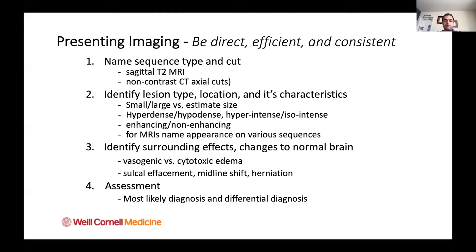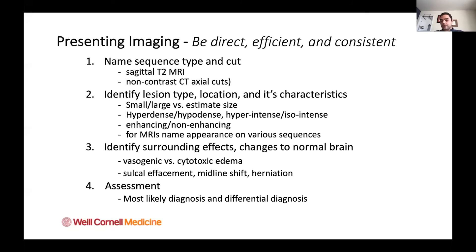Then move on to identify surrounding effects and changes to normal brain architecture. Is there vasogenic or cytotoxic edema? Is there sulcal effacement or midline shift? Are there signs of herniation or hemorrhage? You could have hemorrhagic tumors, or a tumor causing compression of the third ventricle or cerebral aqueduct, causing hydrocephalus — you want to identify all of that.